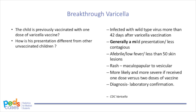However, most patients will have at least partial immunity and have a milder presentation. Breakthrough varicella occurs much more commonly in children who have received only one dose of varicella vaccination, but can rarely occur after the recommended two doses. It is often mild and less contagious. The rash can range from maculopapular to vesicular and typically has fewer than 50 skin lesions. The child can be afebrile or have a low-grade fever.